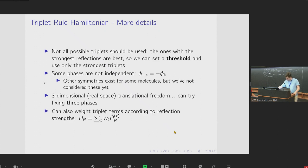Going back to what I said about the triplets with the strongest reflections being the most important, even after choosing triplets based on the threshold, we can also then weight the triplet terms that we are using according to the reflection strength. So we could do this just by including the product of the strengths of reflections as a weight term when we sum up the triplet Hamiltonians.